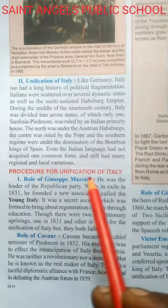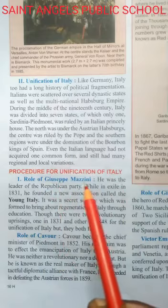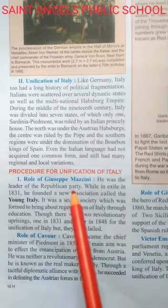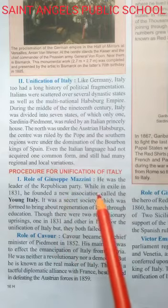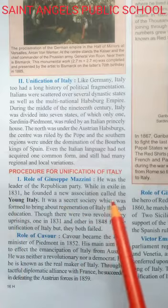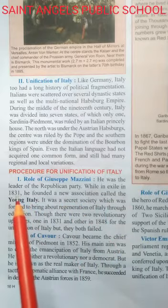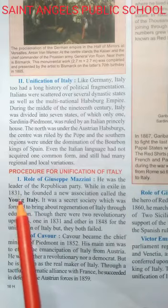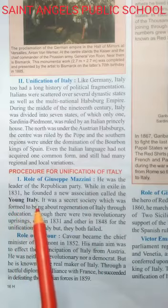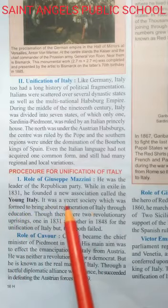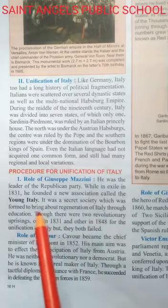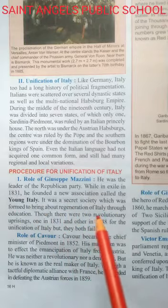Procedure for Unification of Italy. The role of Giuseppe Mazzini. He was the leader of the Republican Party. In 1831, when Mazzini was exiled from the country, he formed a secret organization known as Young Italy, which was formed to bring about the regeneration of Italy through education.